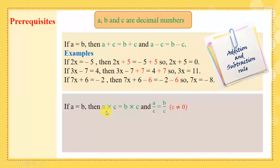If a equals b, then a times c equals b times c. If we have an equality between two numbers, we can multiply both sides by the same number. Also, if we have an equality between two numbers, we can divide both sides by the same number. Of course, this number must be different from 0.